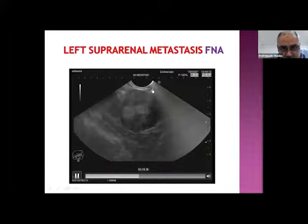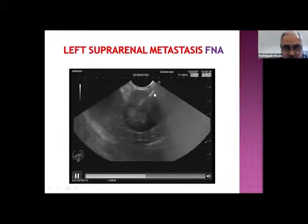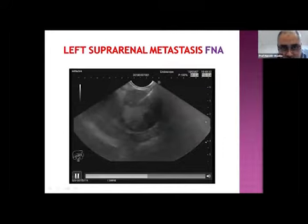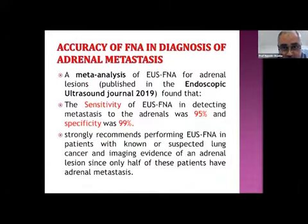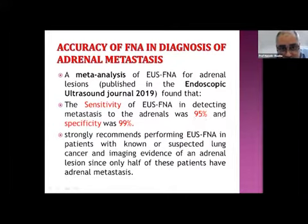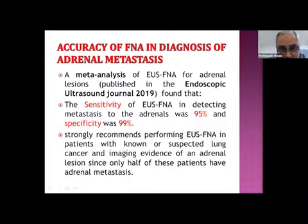The FNA can be done easily — like any FNA. Here is the needle, and it can be done very simply with no intervening structures, no intervening vessels, and the lesion very near to the echoendoscope. A meta-analysis of EUS-FNA for adrenal lesions in 2019 found a sensitivity of 95 percent and specificity of 99 percent in detecting metastasis to the adrenals.